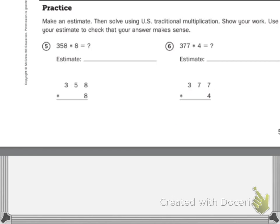Your practice says make an estimate, then solve using U.S. traditional multiplication. Show your work and use your estimate to check that your answer makes sense. First, I'm going to estimate to the nearest ten. I'm looking at my number — the ones digit is above five, so I round up, changing my five to a six: 360. And eight is two away from ten, so I round up to ten. Anything times ten, I just add a zero, giving me 3,600.